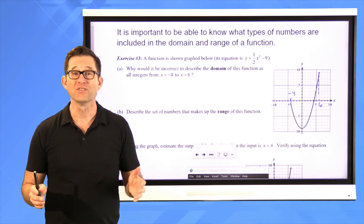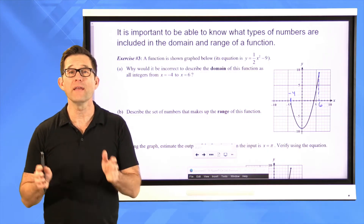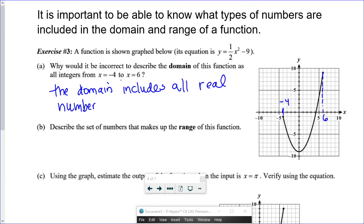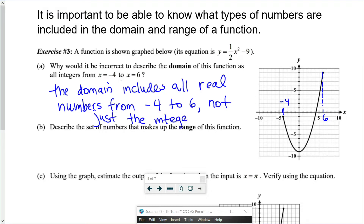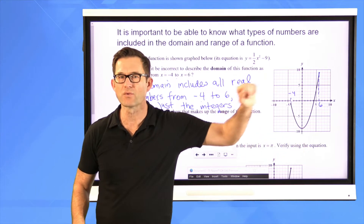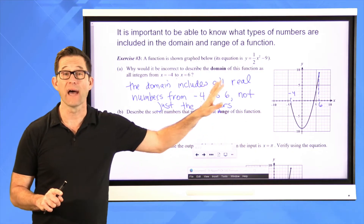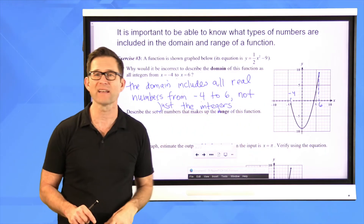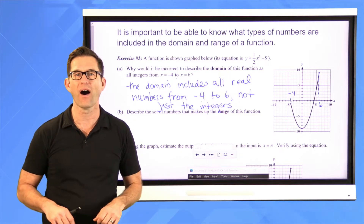The answer is that the domain includes all real numbers from negative four to six, not just the integers. Because this is an unbroken, continuous curve, it passes through x equals one-half, x equals pi, and all sorts of values. If it were just dots at integer locations, then describing it as integers would be correct — but this curve is continuous with no breaks.